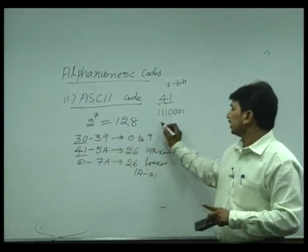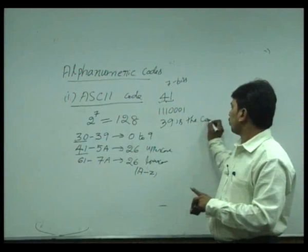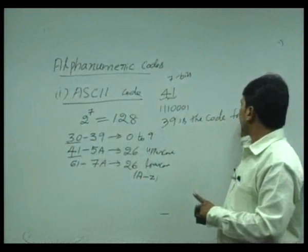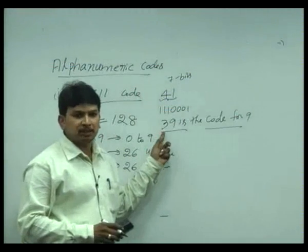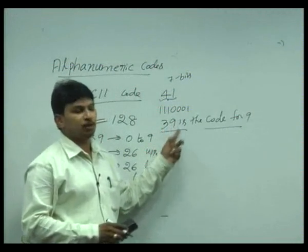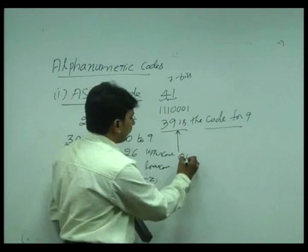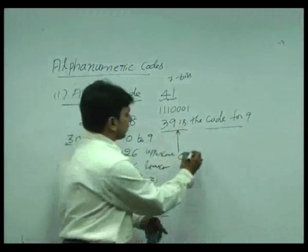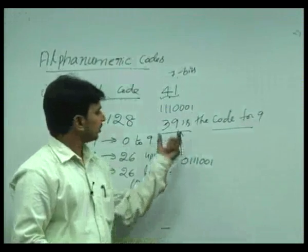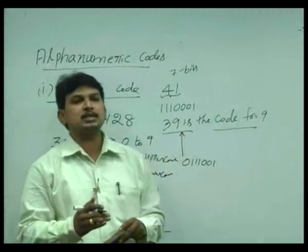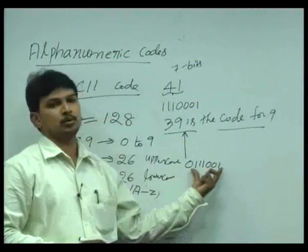If you see the number, 39 is the code for 9. So how to represent 39? As I told you already, 3 is represented by 3 bits, then 9 is represented by 4 bits. So 3 is represented as 0 1 1 and 9 is represented as 1 0 0 1. This is the code. So if you want to transmit 9, you have to use this code.